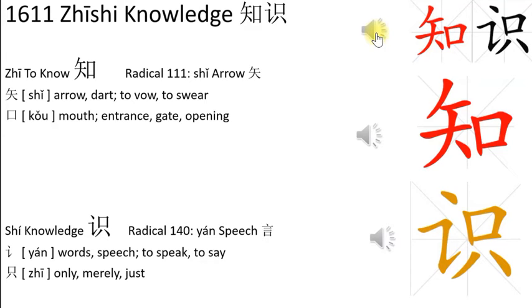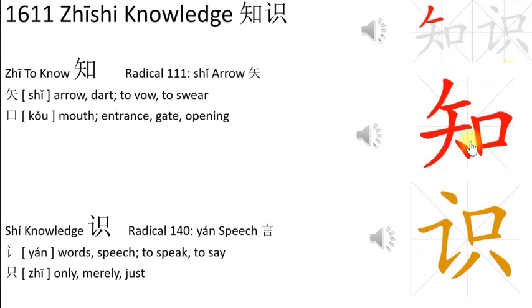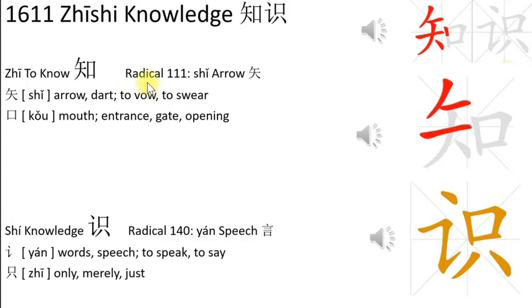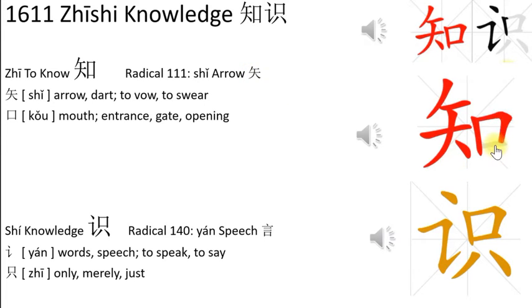知识 means knowledge. From the character 知, radical 111, which means arrow on this side, and 口 mouth. Together they become 知.